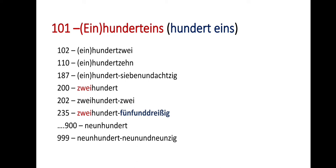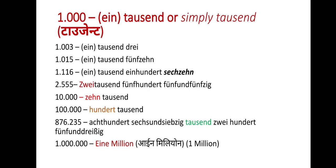If you have multiple hundreds, you must mention the number of hundreds. So 200 is 'zweihundert', 300 is 'dreihundert', up to 900 which is 'neunhundert'. That is how we count hundreds. Now let's move to thousands.